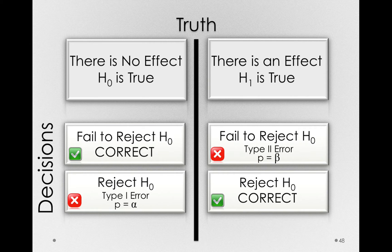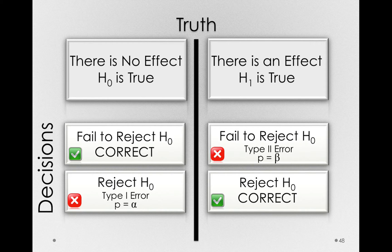So far, we've only talked about the names of our errors in statistical decision-making. Let's talk about the names we have for our correct decisions.